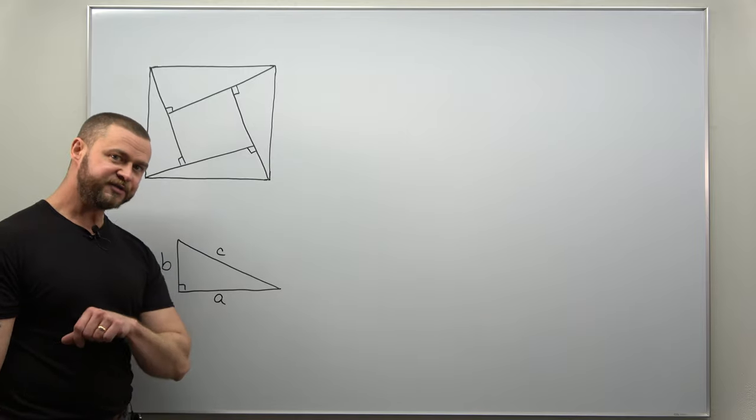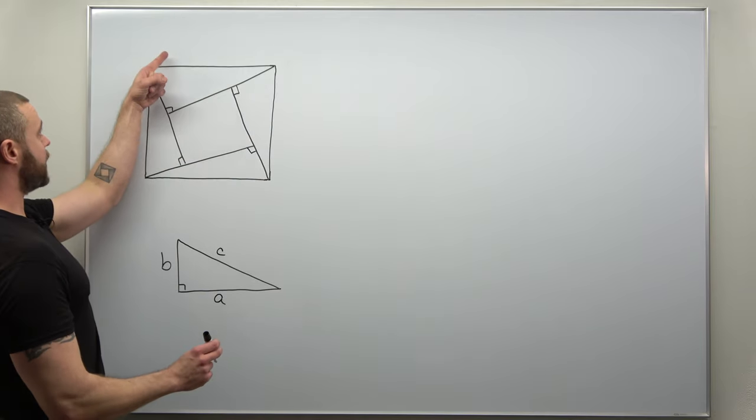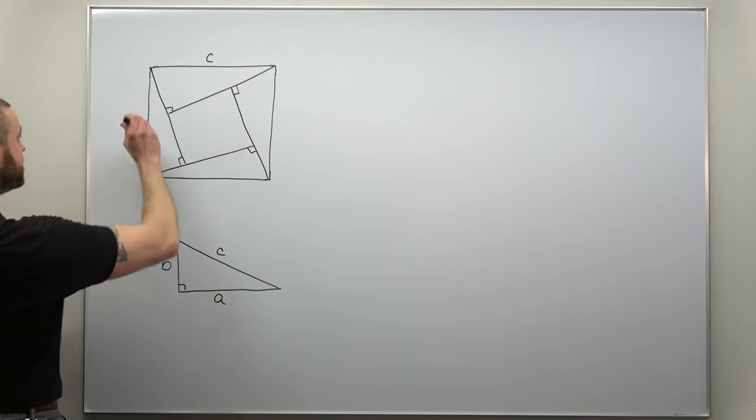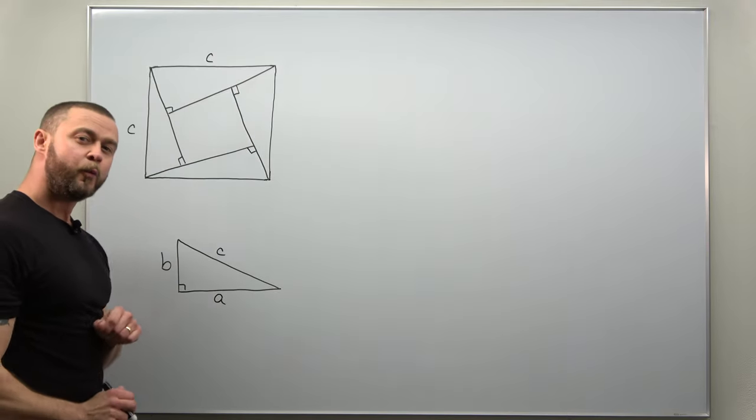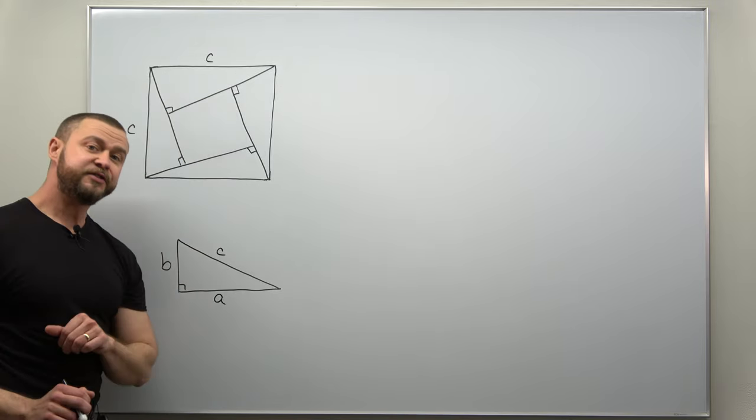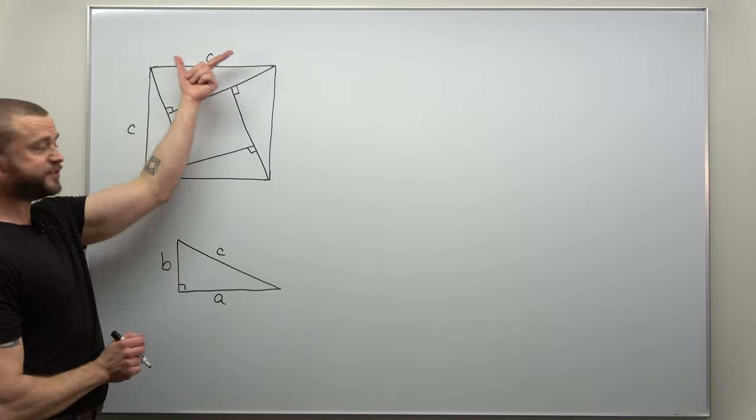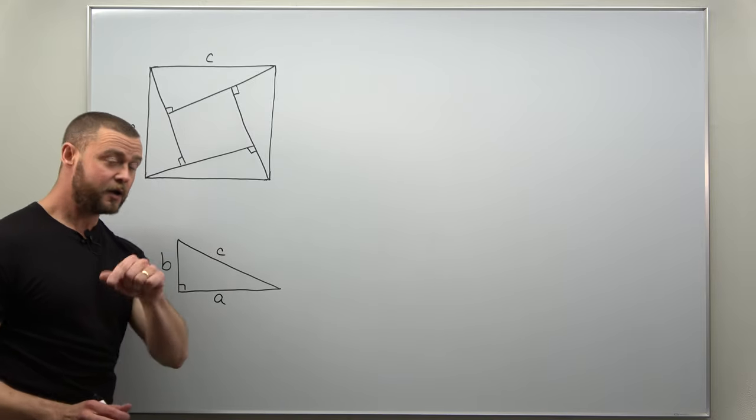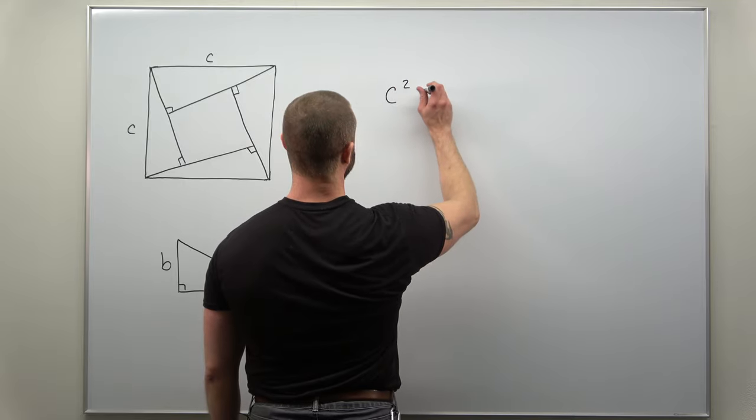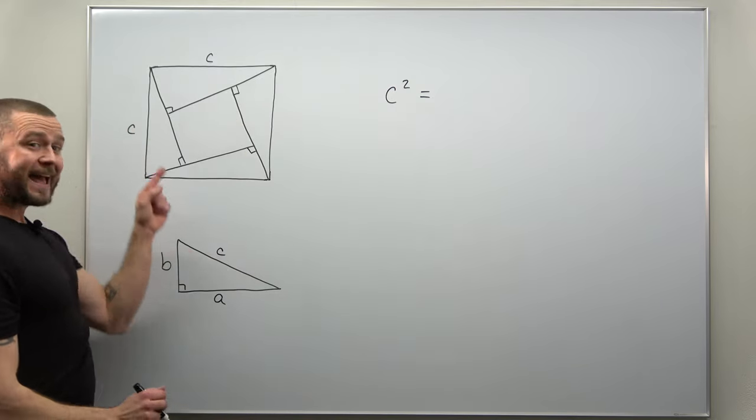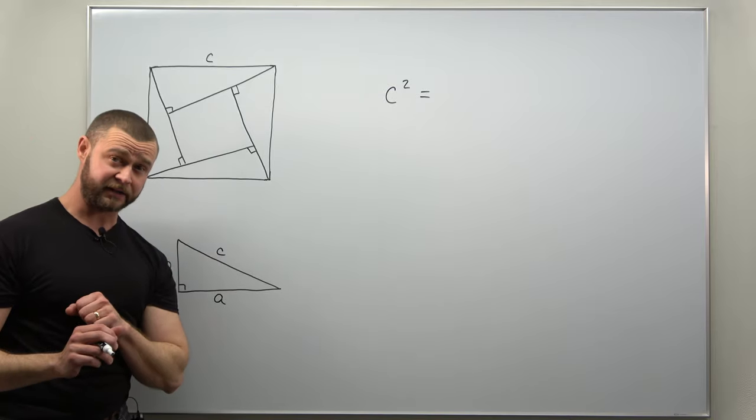All right, now if we put those side lengths here we have our hypotenuse C and our hypotenuse C here. This shouldn't be a surprise that the lengths are the same. This is a square so we find length C by C. We can calculate the area of this square which would be C squared. That's the area of the square looking at it from the outer perspective.